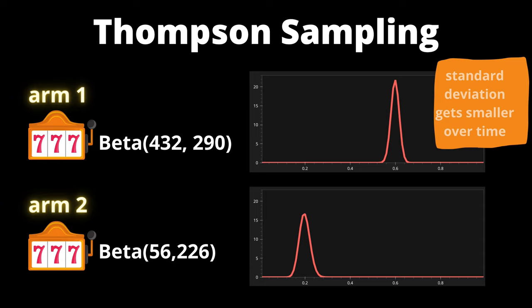The standard deviation should get smaller and smaller as time goes on. And the standard deviation for the winning arm should get smaller than the other arm.